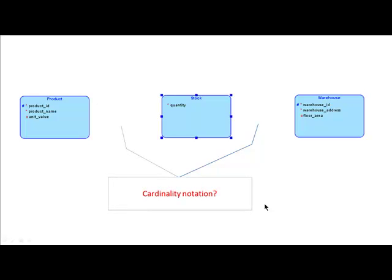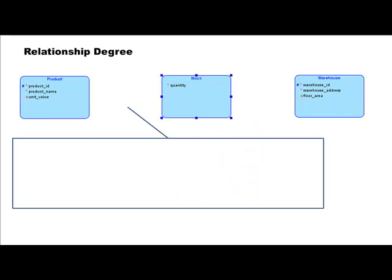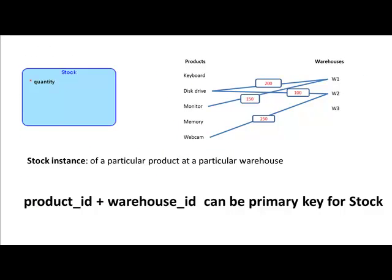Now, what kind of cardinality notation do we put on? Let's talk about the cardinality notation between product and stock. We need to think about what is the degree of the relationship. Given one product, how many stocks can it have? Take disk drive — we can see from the diagram that a disk drive can have two stocks: 200 in warehouse one, 100 in warehouse two. So at most, a product can have many stocks — it could be many. And looking from the point of view of stock: how many products can a stock be related to? If you take a particular line, the line can only connect to one product.